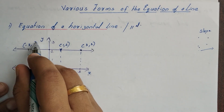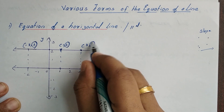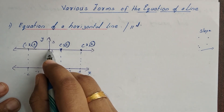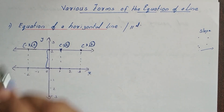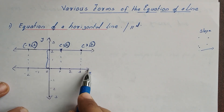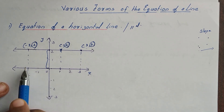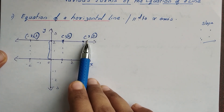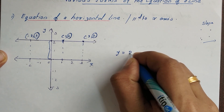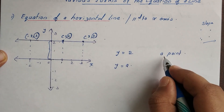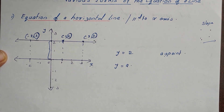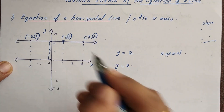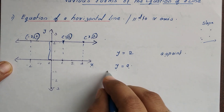In all cases, the y-coordinate remains constant at 2, while the x-coordinate varies. The distance from the x-axis is the y-coordinate value. Since this line is parallel to the x-axis, the equation of a horizontal line is y = a. Here, the distance a equals 2, so the equation is y = 2.